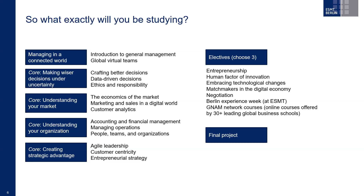There are electives, and you can choose three from multiple options. Some are offered by ourselves, and you have an opportunity to come to Berlin for an experience week. We also have a global experience week — our students are currently in South Africa learning about doing business there. You also have access to network courses offered by more than 30 schools which are part of the Global Network for Advanced Management, meaning you could take a small online course at schools like Yale or HEC Paris, which helps you build your network.